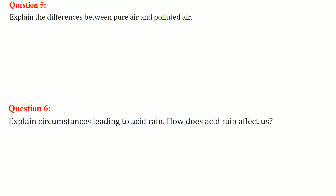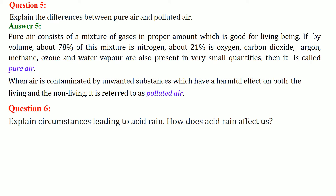Explain the difference between pure water and polluted water. Pure air is a mixture of gases in proper amounts, which is good for living beings. 78% of this mixture is nitrogen, 21% is oxygen, and carbon dioxide, argon, methane, ozone, and water vapor are present in small quantities. This is known as pure air. When it is contaminated with any unwanted substance, it is referred to as polluted air or polluted water.